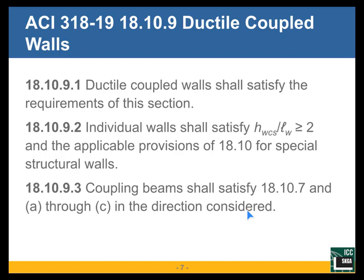We also realized that we were not talking about any coupled wall system. If we are talking about high seismic applications, it has to be a ductile coupled wall system. The shear walls that are coupled must be ductile, meaning they have to be special shear walls as detailed by ACI 318 requirements. And the coupling beams also have to be specially detailed as required by Chapter 18 of ACI 318.